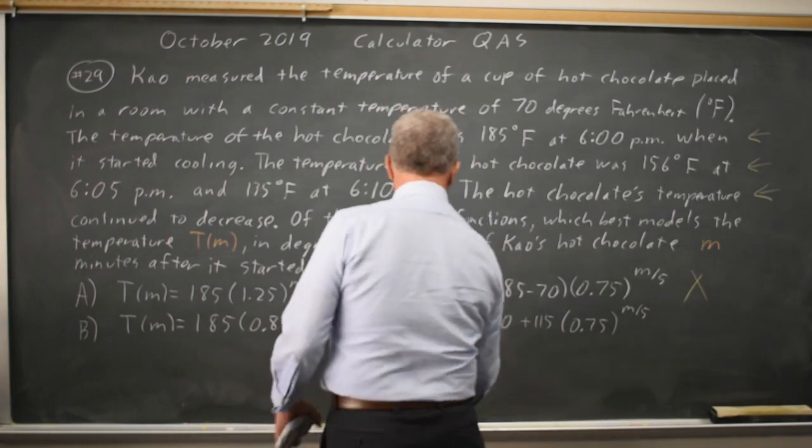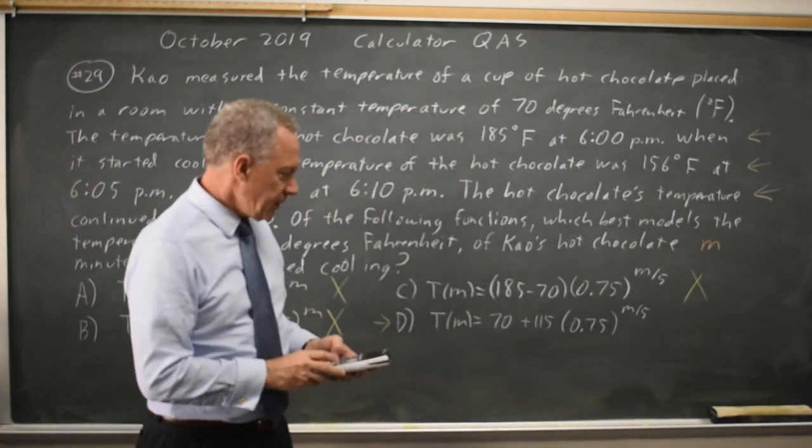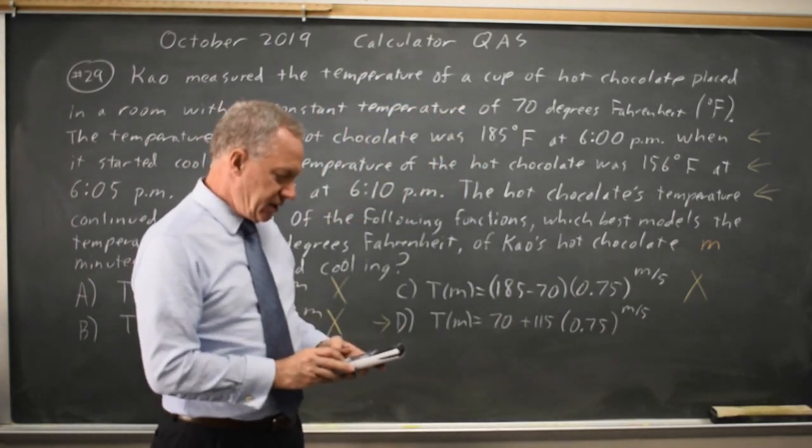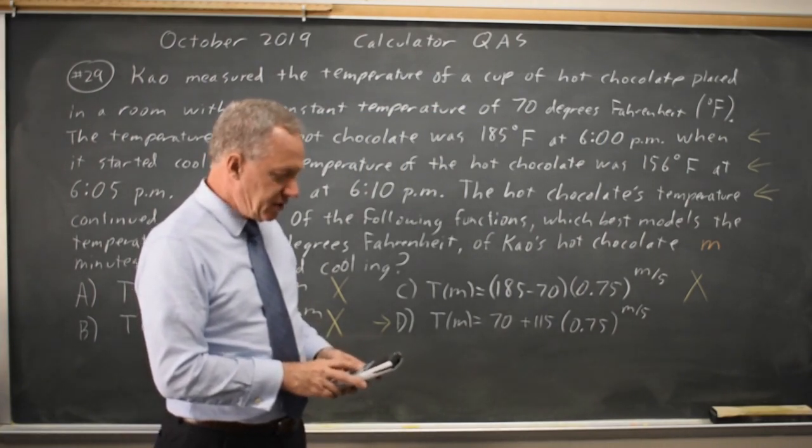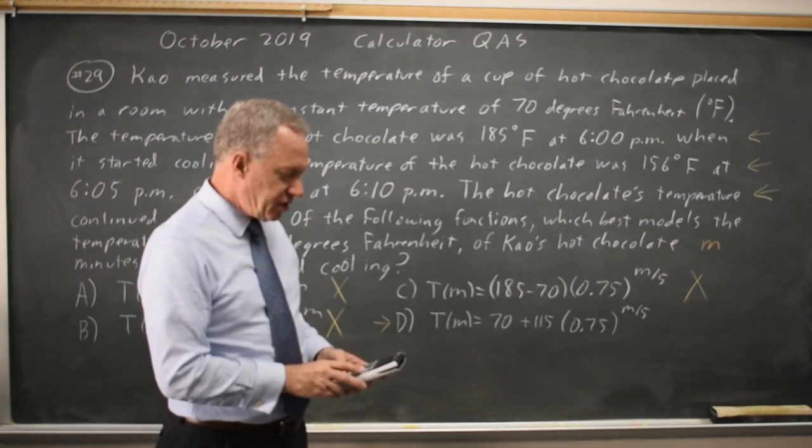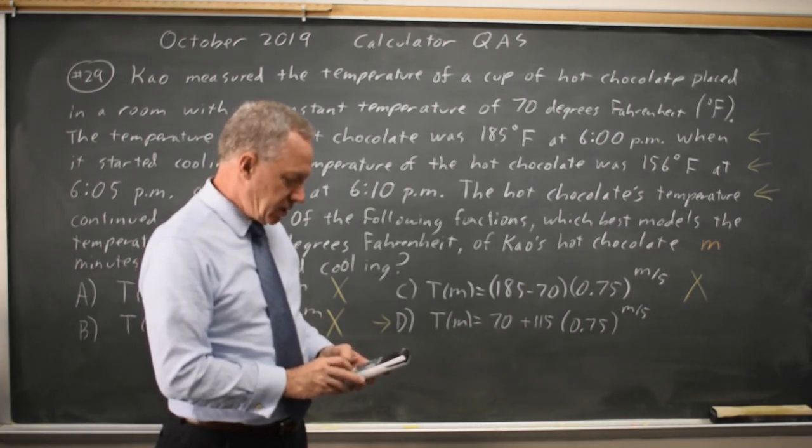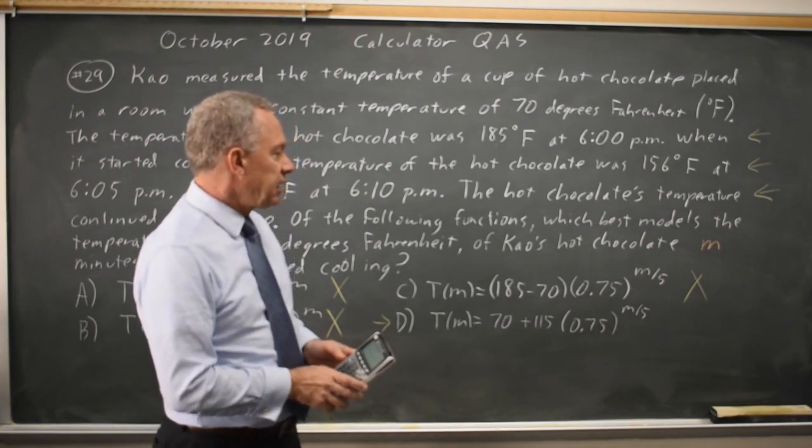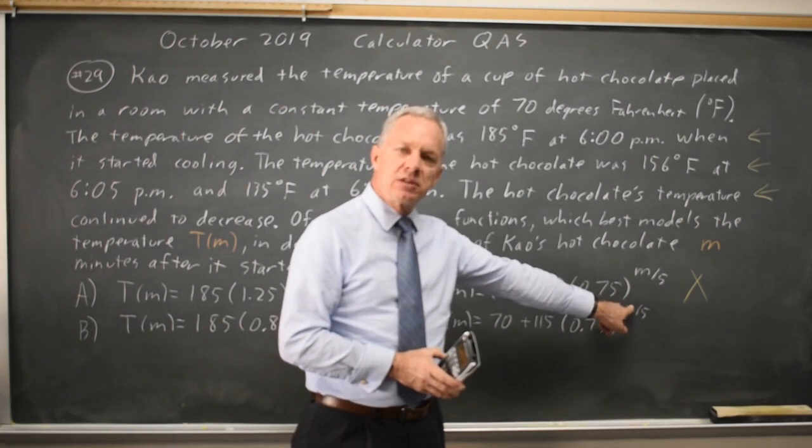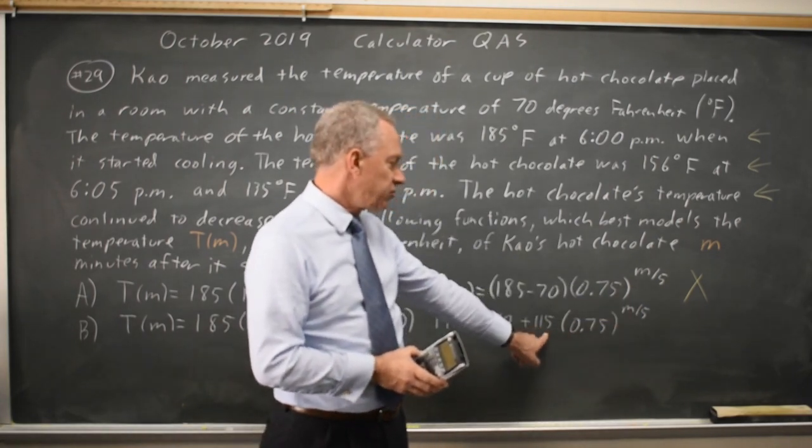Our correct answer has to be D. Let's check it. 70 times 0.75 to the power at m equals 0, that's to the 0, so that's 115 times 1 is 115, plus 70 is 185. That matches.